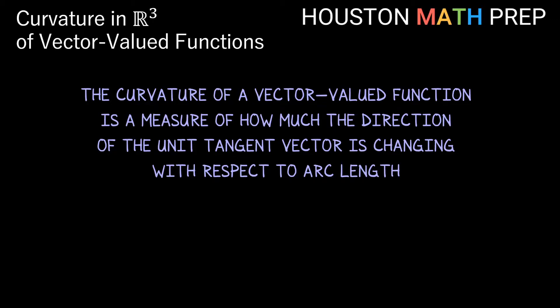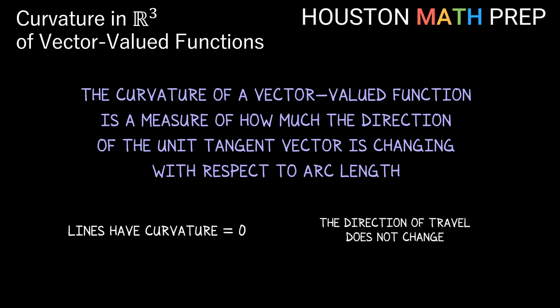A couple types of vector-valued functions with constant curvature: lines have constant curvature zero. Since a line as a vector-valued function is always traveling in the same direction through space, its tangent vector will always point in the same direction — so no unit tangent change, no curvature.